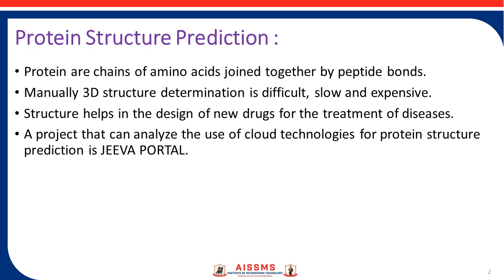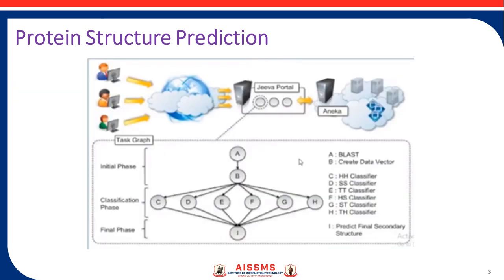This prediction uses machine learning techniques for explaining the secondary structure of proteins. There is one portal available online for the prediction of protein structure, which is called the JIVA portal for protein structure prediction.